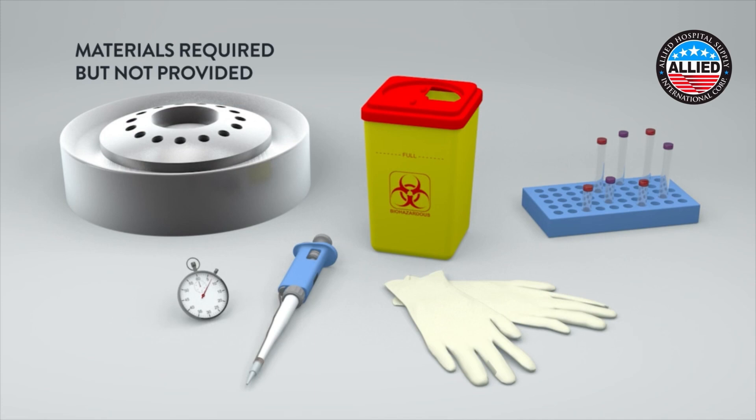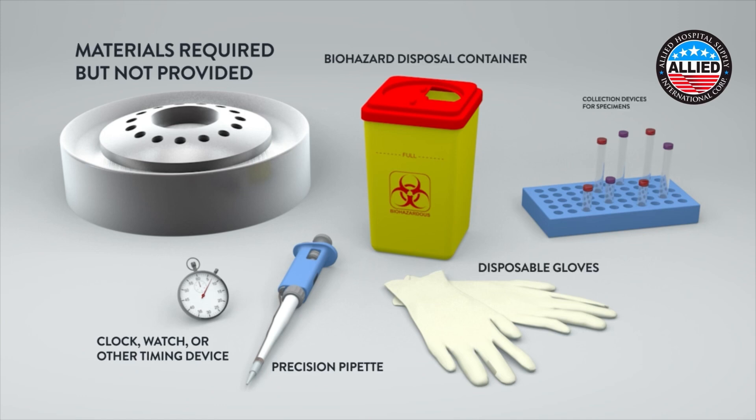Materials required but not provided: clock, watch, or other timing device; precision pipette capable of delivering 50 microliters of sample with disposable tips; disposable gloves; biohazard disposal container; collection devices for specimens other than finger stick whole blood specimens; and a centrifuge.